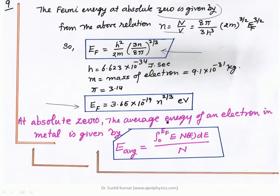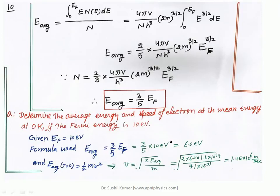The Fermi energy is the energy of an electron in a particular energy state. To find the average energy of an electron in metal, the total energy from 0 to EF for all electrons is divided by the total number N. After solving this integration, the average energy E_avg = (3/5) × EF by putting the value of N.